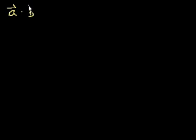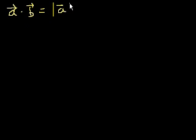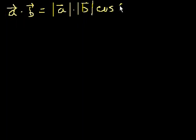So if I have two vectors, let's say vector a dot vector b. That is equal to the magnitude of vector a times the magnitude of vector b times cosine of the angle between them. Now where does this come from? This might seem a little arbitrary, but I think with a visual explanation, it'll make a little bit more sense.